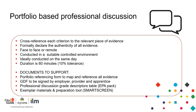Normally, if face to face, the observation and professional discussion would be done on the same day. The professional discussion lasts 60 minutes with a 10% tolerance — so around 66 minutes. Supporting documents include the portfolio referencing form, the gateway declaration form signed by all three parties, the PD grade descriptors table from the EPA pack, and the exemplar materials and preparation tool available on the preparation tab under Smart Screen once you've registered your apprentice.